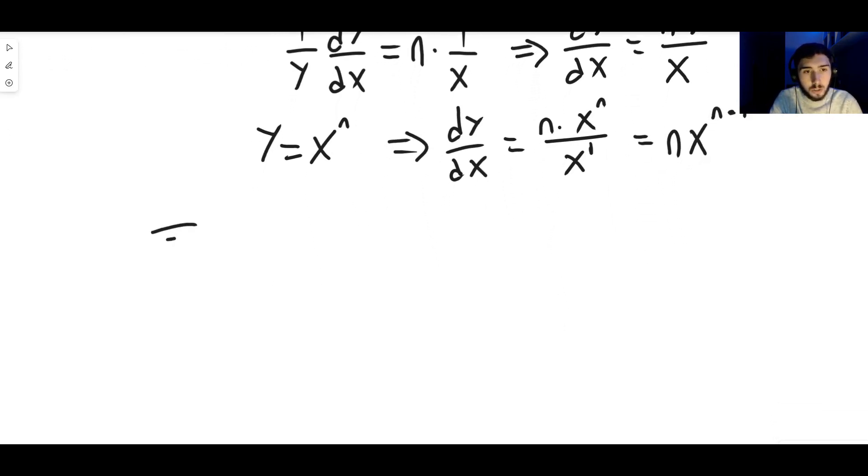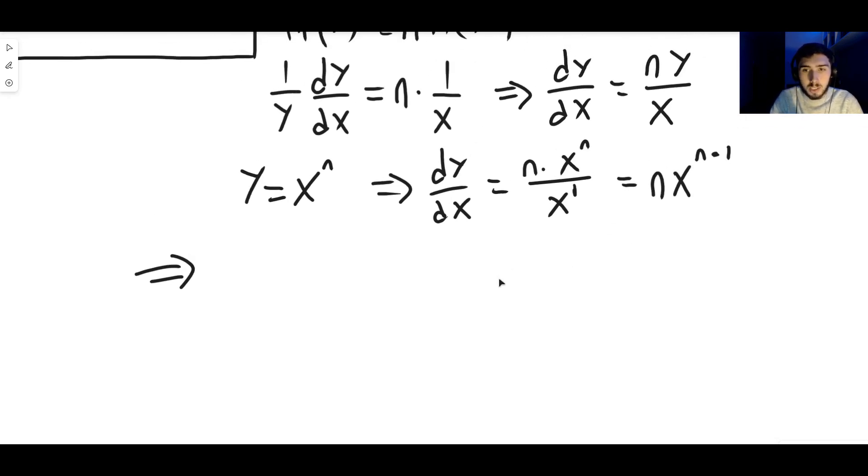We can finish off simply by saying that dy dx of x to the n is n x to the n minus 1, which is exactly what we were looking for. That is the power rule. That is how we derive it.